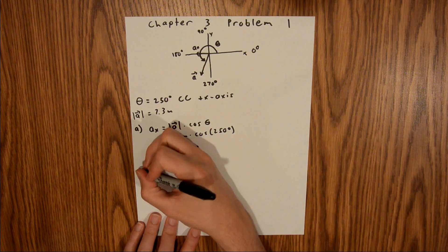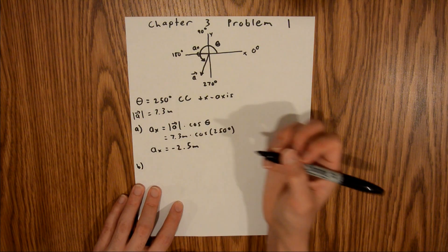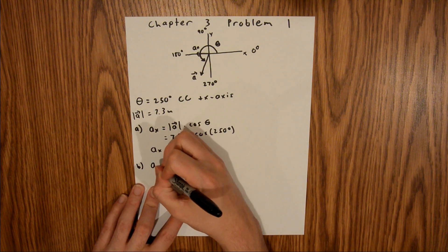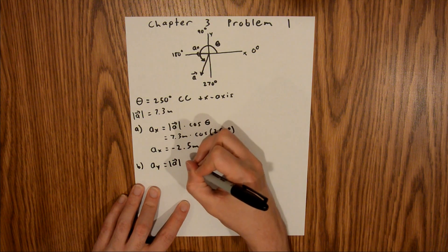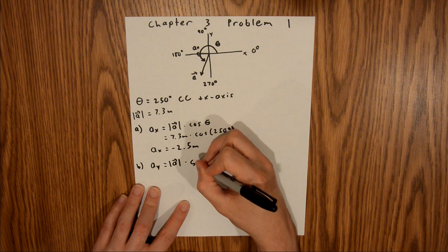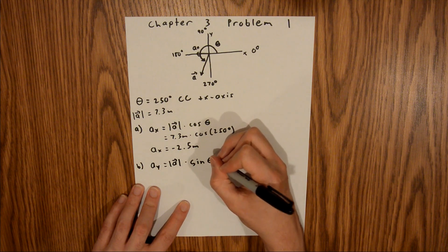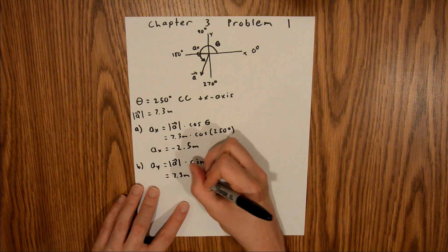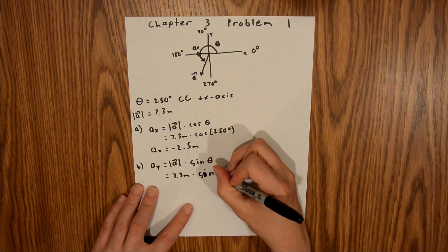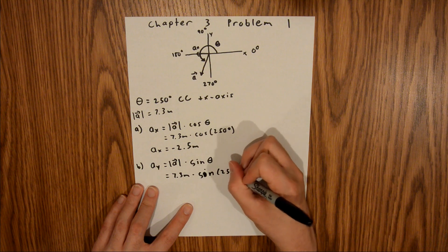Now moving on to part B, we are asked to do the same thing, but find the y component. And so the generic equation for the y component is equal to the magnitude of that vector times the sine of theta. So again, we have both of the values that we need for that 7.3 meters times the sine of 250 degrees.